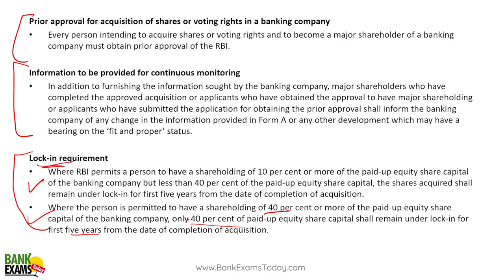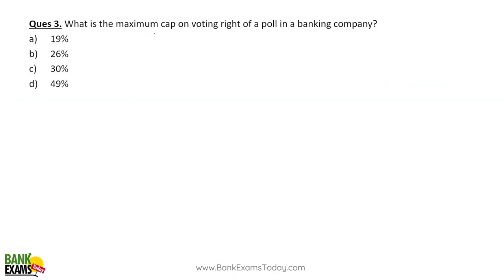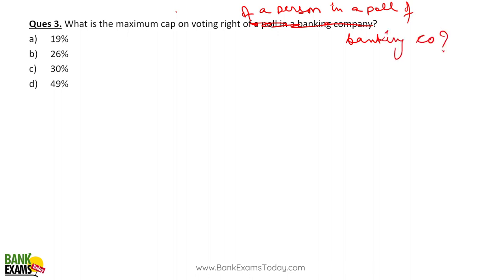Question three: what is the maximum cap on the voting right of a person in a poll of a banking company? The maximum cap on the voting right of a person in a poll of a banking company is 26%. So 26% is the maximum voting right a person can hold in a banking company poll.